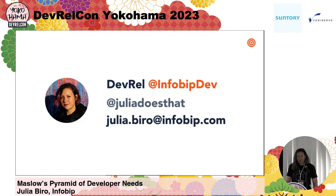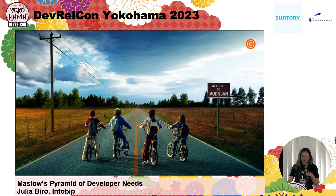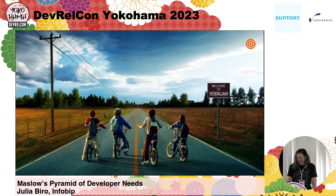Let's look at the company first. We are a cloud communication platform, and now I can say the most connected one in the world. Long story short, you can embed communication features into your application. But there is something special about Infobip. Who has heard about Infobip? Oh, nice — that's quite an improvement on the usual numbers. So it is actually a unicorn based out of Croatia, and it all started in a small town called Vodnjan on the Croatian coast.